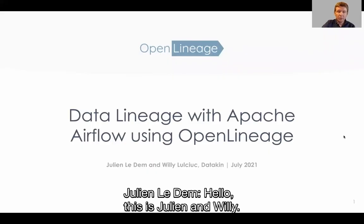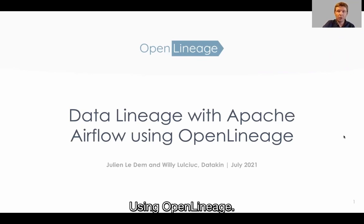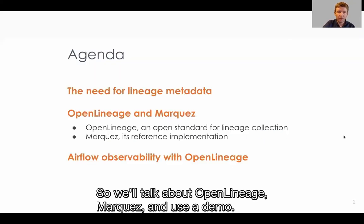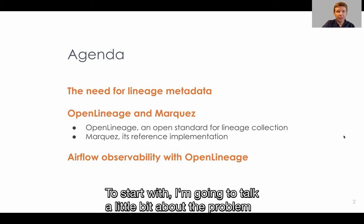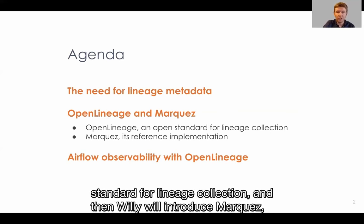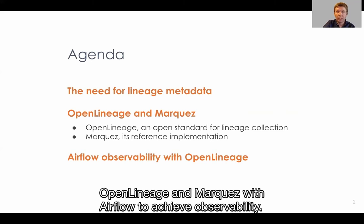Hello, this is Julien and Willy. We're from Datakin. Today we're going to talk about data lineage with Apache Airflow using OpenLineage. We'll talk about OpenLineage, Marquez, and end with a demo. To start, I'm going to talk about the problem and how to address lineage and why it's important. After that we talk about OpenLineage, which is an open standard for lineage collection, and then Willy will introduce Marquez, its reference implementation, and we'll end with a demo of how to use OpenLineage and Marquez with Airflow to achieve observability.